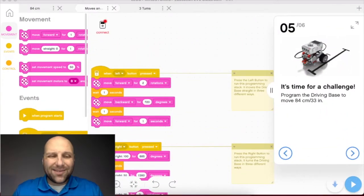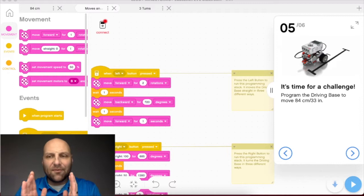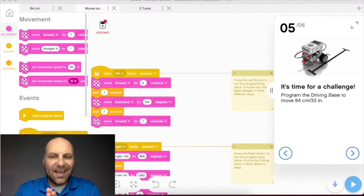Alright my friends, here we are. It's time for the challenge. We are on step number five of six of this first lesson for our robot trainer course. What it's asking us to do is program the driving base to move 84 centimeters or 33 inches.